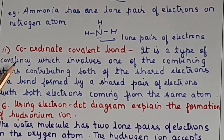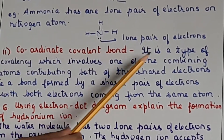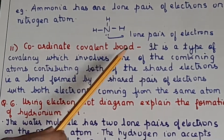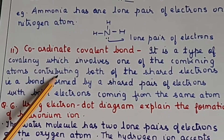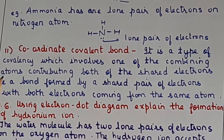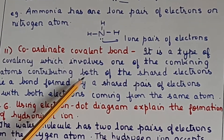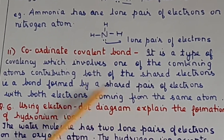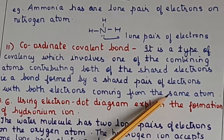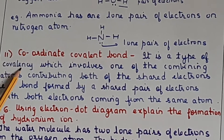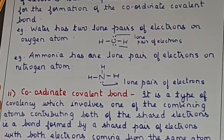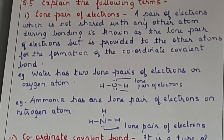The coordinate covalent bond is a type of covalency which involves one of the combining atoms contributing both of the shared electrons. It is a bond formed by a shared pair of electrons with both electrons coming from the same atom. This is the definition of coordinate covalent bond - give five stars to this as well, it is very important.